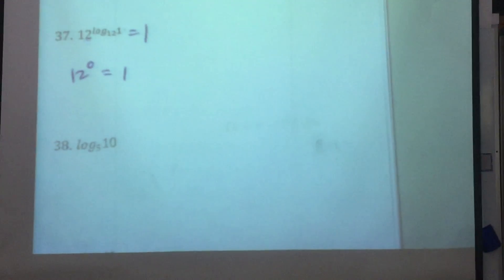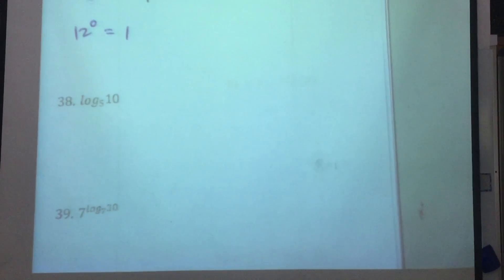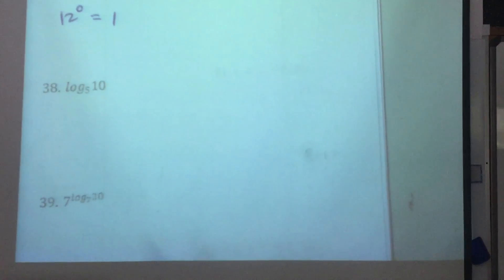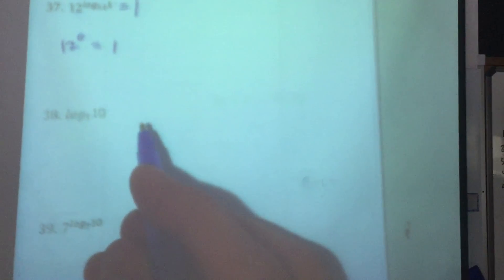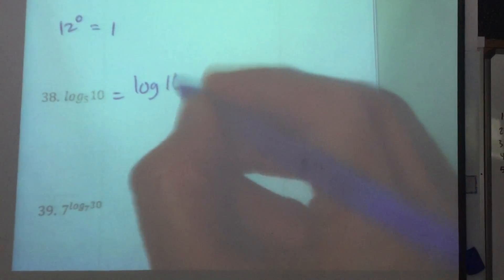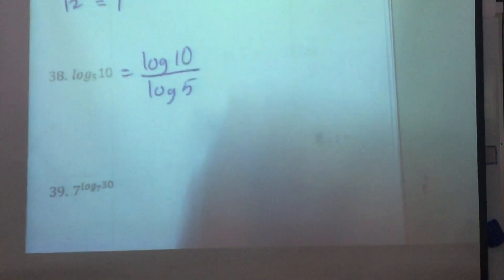Number 38. Log base 5 of 10. There's really not what we can do here. It says write as a single logarithm and simplify if possible. So it's already written as a single log. The only thing that we can do here is to calculate what it is by changing the base. Log of 10 over log of 5. And log of 10 is just 1.